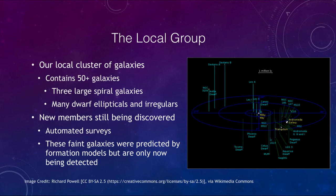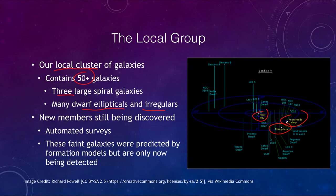Starting close to us, we have what we call our local group — our local cluster of galaxies. It contains a little over 50 galaxies, including three large spiral galaxies: the Milky Way, the Andromeda galaxy, and the Triangulum galaxy. There are also many dwarf elliptical and irregular galaxies scattered around. Even though these are the closest galaxies to us, we are still discovering new members through automated surveys that find concentrations of stars and detect very faint galaxies that had been predicted but only recently detected.